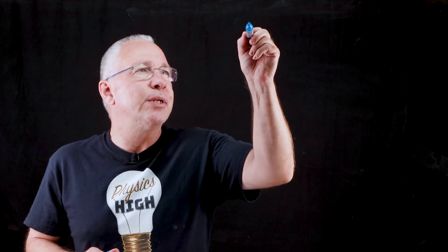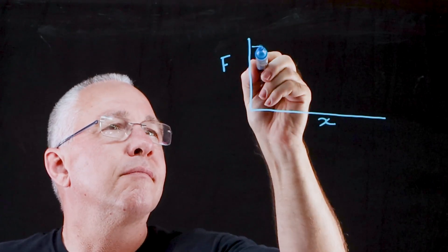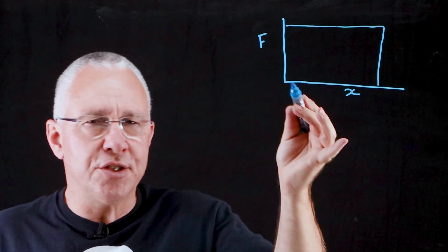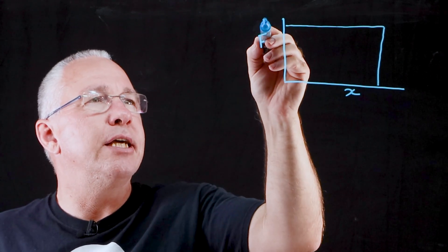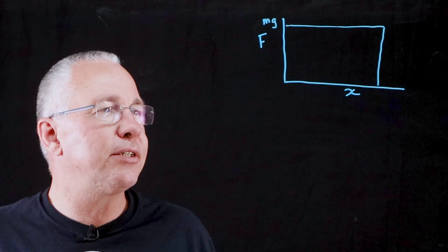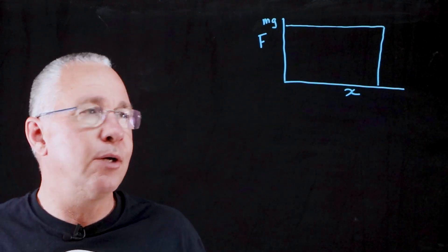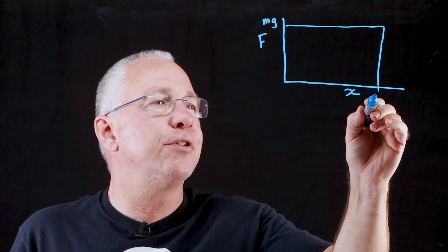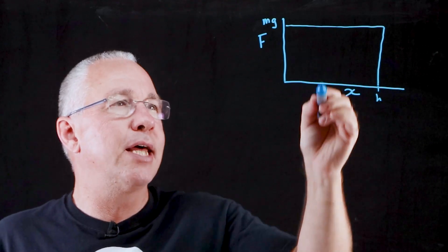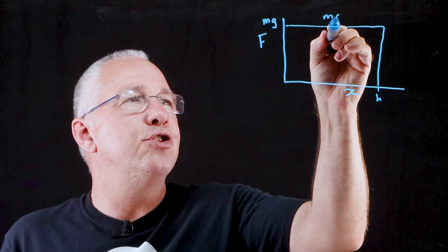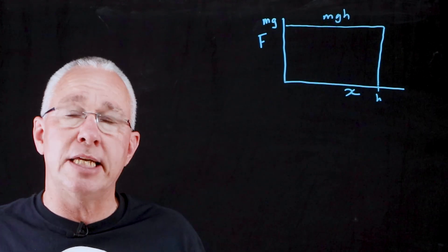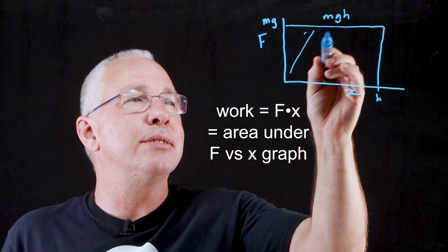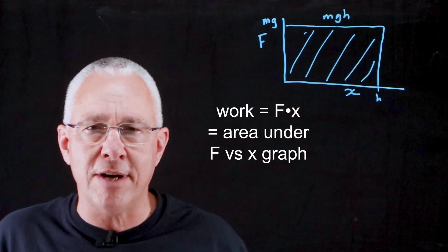If we were to graph that, we would get this. We're applying a constant force, which is usually the weight of the object, over a certain displacement, which is the height of the object. When we multiply that out, we get mgh. In other words, the increase in potential energy, and that just happens to be the area underneath the graph.